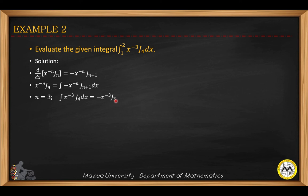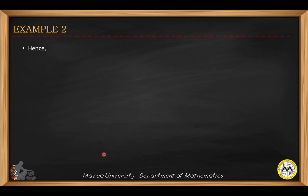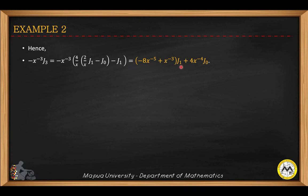Now we reduce or express J sub 3 in terms of J sub zero and J sub one using the recurrence relation. Solving for J sub n plus one: taking n equals 2, J sub 3 equals (2 times 2 over x) times J sub 2 minus J sub 1. Then we express J sub 2 in terms of J sub one and J sub zero at n equals one. Substituting, we simplify to get an expression for J sub 3 in terms of J sub one and J sub zero.